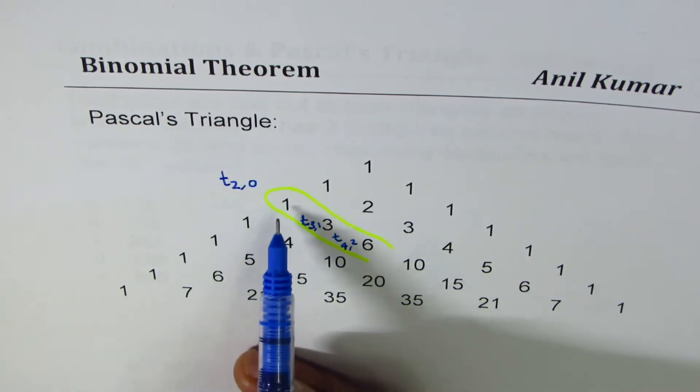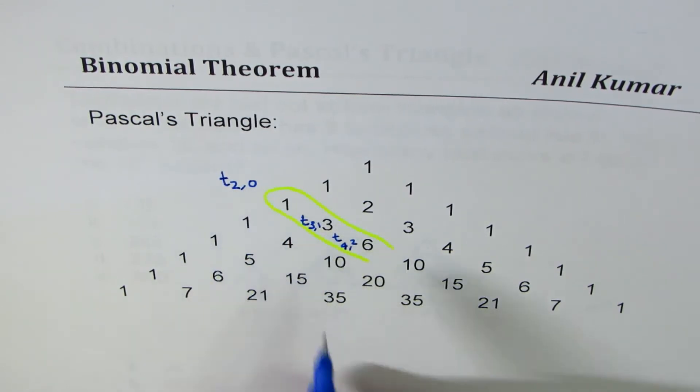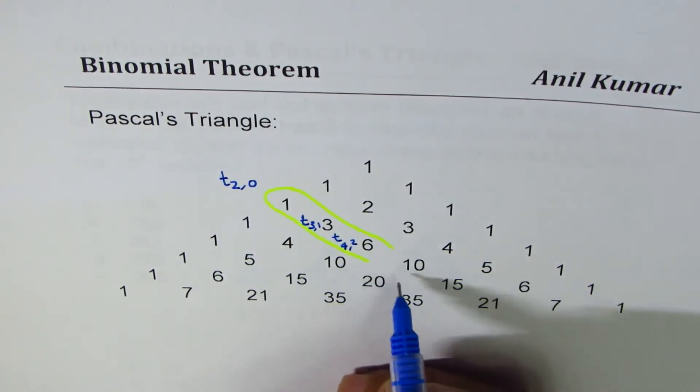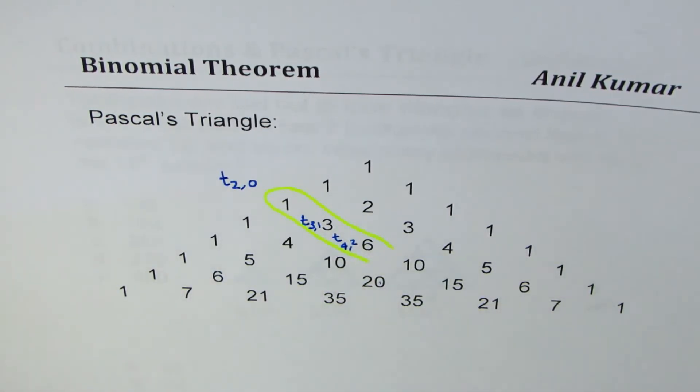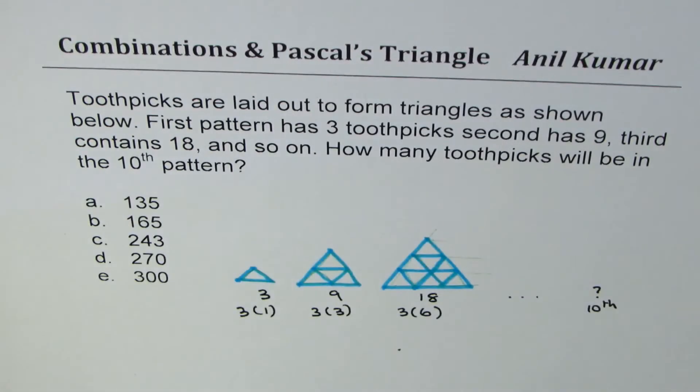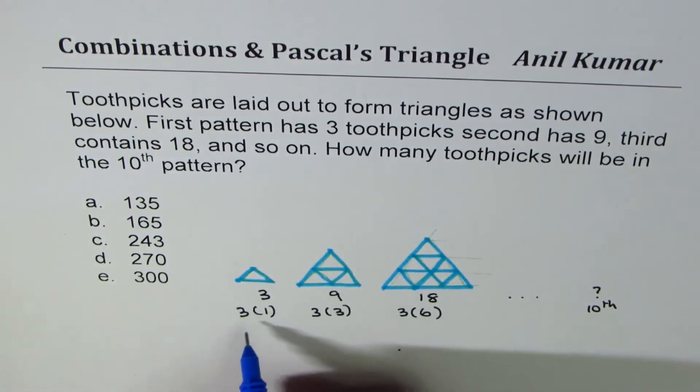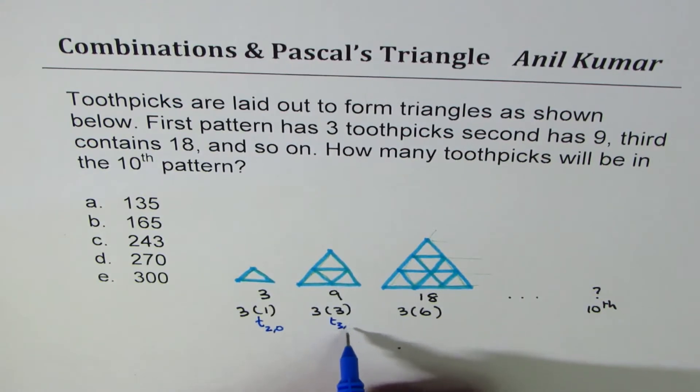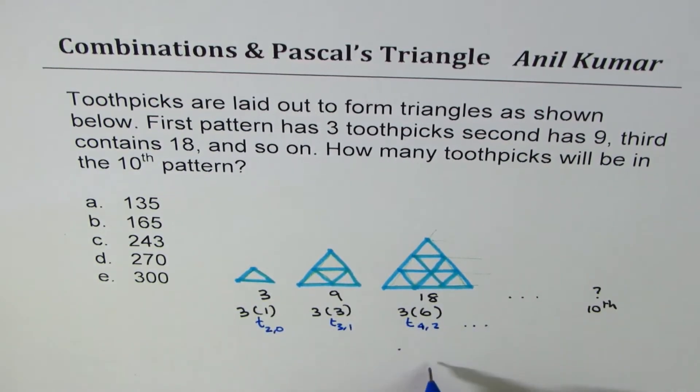So the number in the first one could be written as—in general, if we move on, we could write this as—consider this now, let's go back to our sheet, right? So what we find here is, it is 1, you can find in term number 2, 0, and 3, you can find in term number 3, 1, and this you can find in term number 4, 2, and so on, correct?